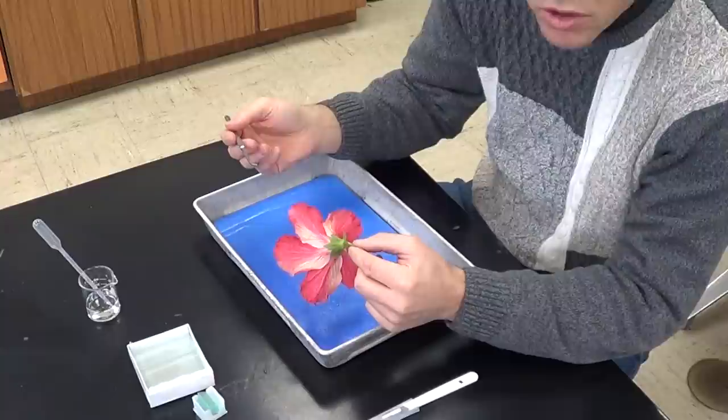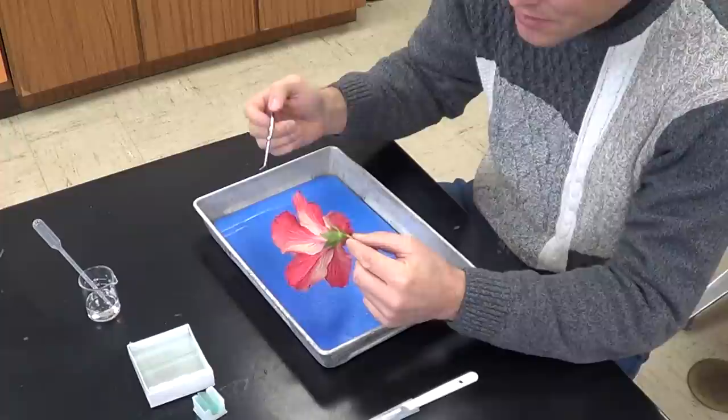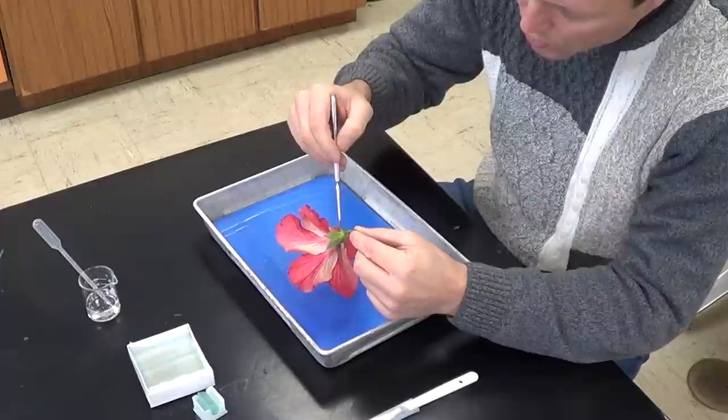Now, not only do we want to name these structures, but we want to count the number of these structures because we want to ultimately figure out is this flower a monocot or a dicot?